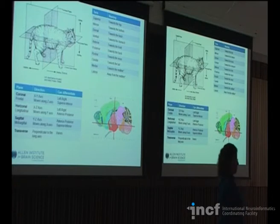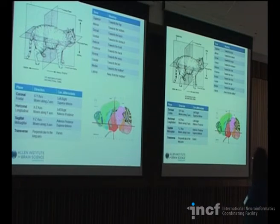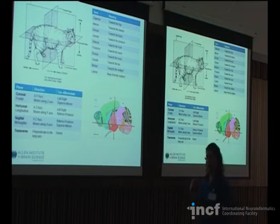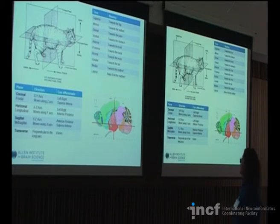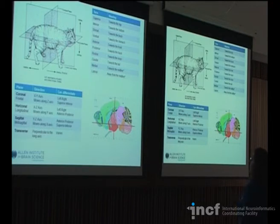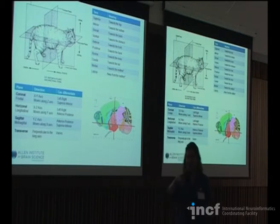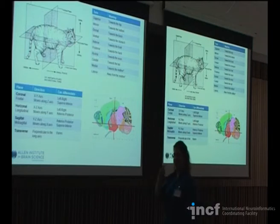Terms that go with the nomenclature: superior is up, inferior is down, anterior is to the front, posterior is to the back. We have a little bit of a problem going from mice and other animals that walk on four feet to humans that walk upright because our brains are positioned slightly differently. So we have additional terminology: rostral is towards the nose, caudal is towards the tail, dorsal is towards the back, and ventral is towards the stomach.